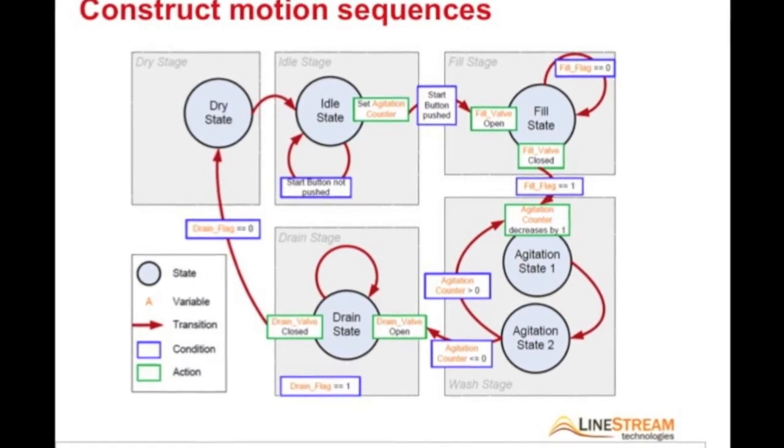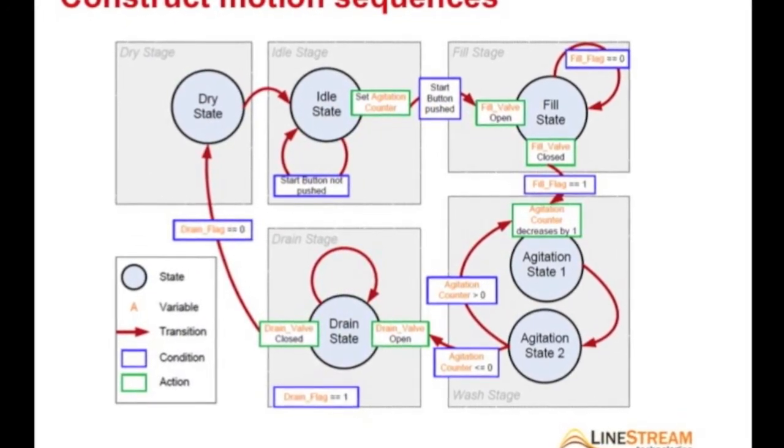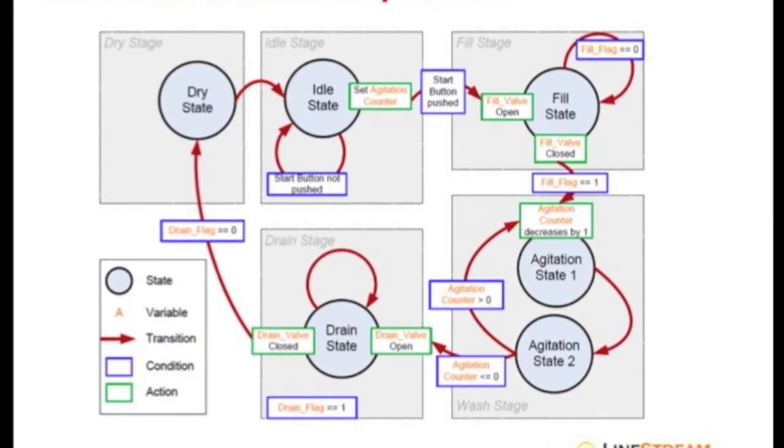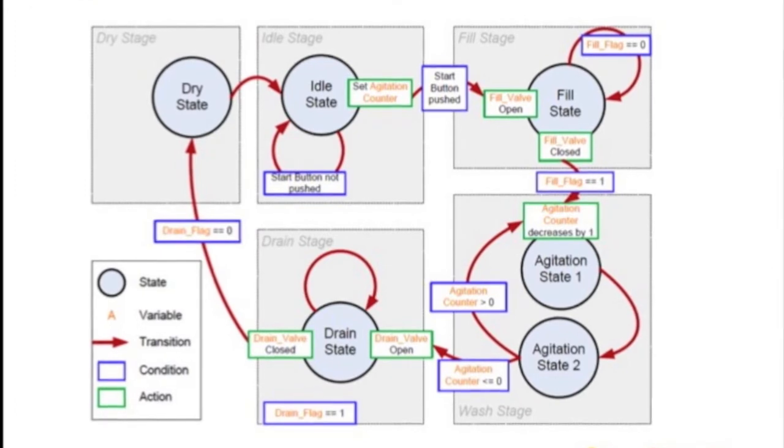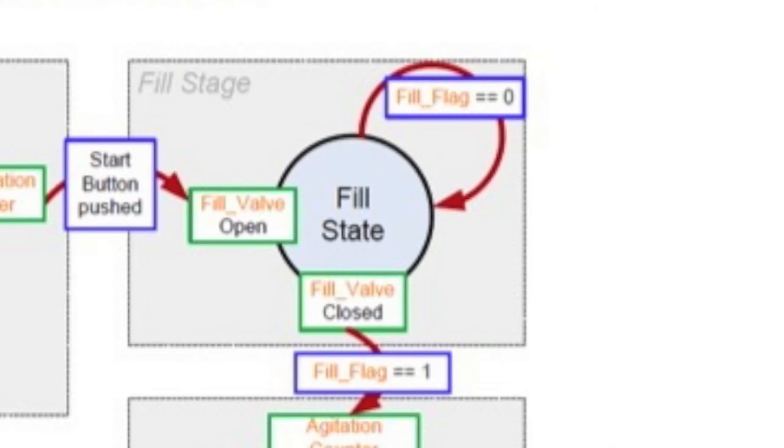InstaSpin Motion allows you to build application motion sequences without constructing a complex finite state machine. This figure displays the motion sequence for a washing machine. This supports conditional transitions, external interfacing variables, and it's runtime configurable. What this means is that it allows transitions from one state to many states. It controls external actuators and reads sensors, and it can configure the motion sequence without recompiling the project.